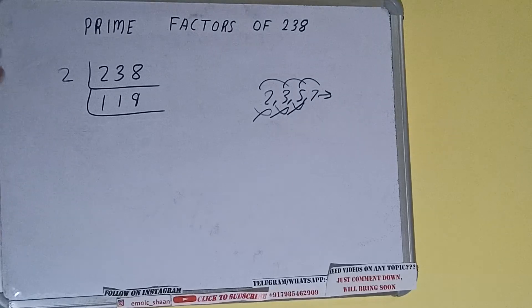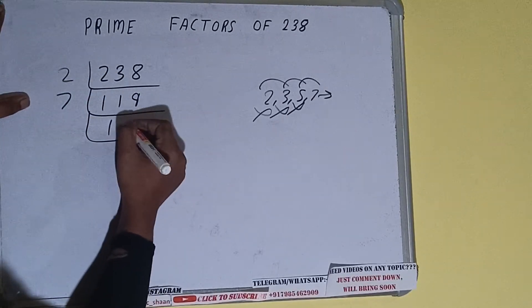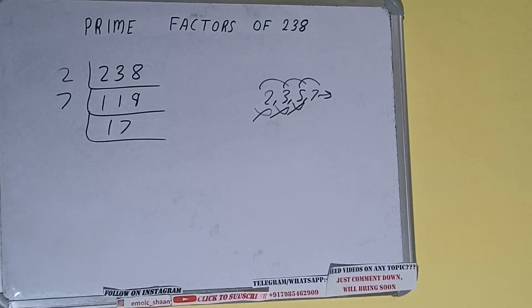119 divided by 7. It is divisible by 7. We get 17. Is 17 further divisible by 7? It is not, and 17 is also a prime number.